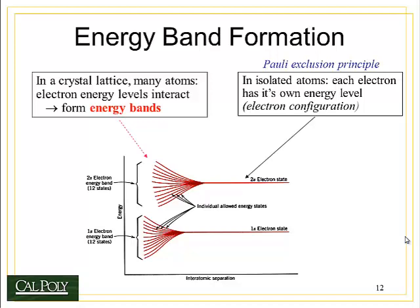Let's understand what energy band formation is all about. When two atoms are far apart, they have two electron states — the 1s orbital and the 2s orbital — and can have other orbitals depending on the size of the atom. As these two atoms get closer together, the electrons are forced into more finite bands because of the Pauli exclusion principle, forcing them into multiple states: 12 states for the 1s orbital and another 12 states for the 2s orbital. You actually get a continuum of states where an electron can occupy any one of these states depending on how much energy it has, and electrons will jump around between these different states.